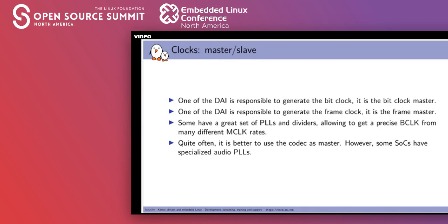One DAI — either the SoC DAI or the codec DAI — will be the bit clock master, and one DAI will be the frame clock master. These don't have to be the same DAI; you can have the bit clock provided by the codec and the frame clock by the SoC. Codecs usually have a great set of PLLs and dividers allowing precise BCLK generation from many different MCLK rates, so it's generally more flexible to have the codec as bit clock and frame clock master.